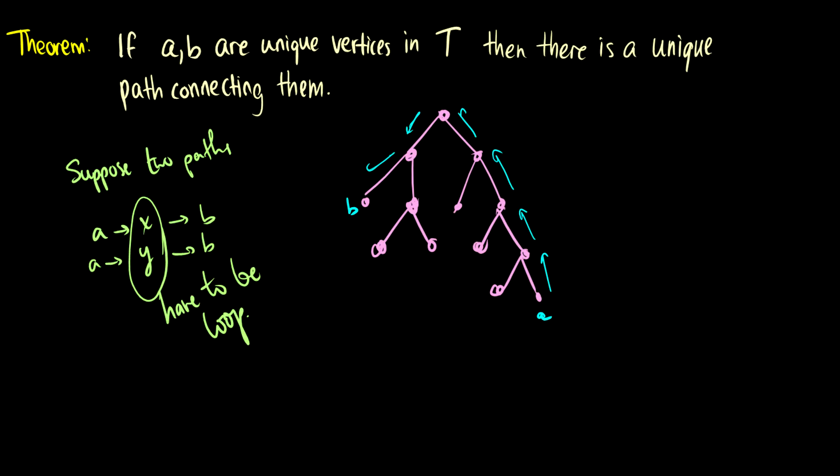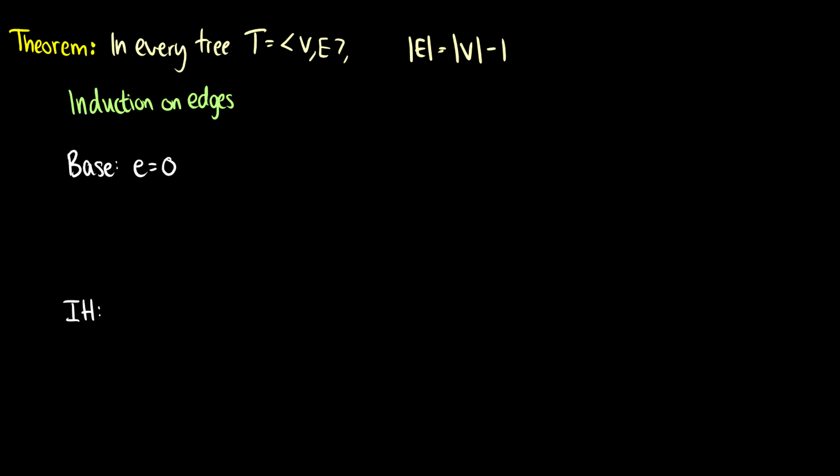So let's move on to something that you probably would have to prove on an exam. And that is the property that in every tree, the number of edges is equal to the number of vertices minus 1. So let's do some intuition first again. If I have three nodes in a tree, there's no loops, and they all have to be connected. So I can connect it like this, and like this.